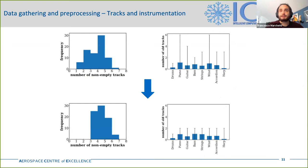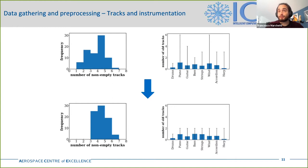After applying these heuristics, the obtained results show improvement. Compared to the original dataset, the number of non-empty tracks per file is greater on average, with none having fewer than three non-empty tracks. Moreover, considering the number of old tracks in each new track, the maximum is now two for all new tracks except drums, and the average is more evenly distributed across the new tracks.